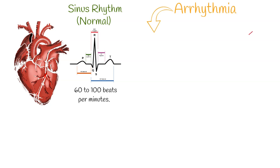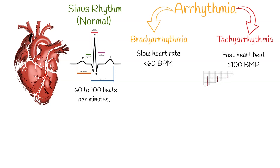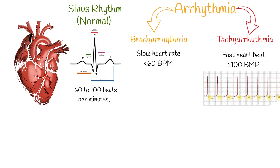The most common way to categorize arrhythmias are bradyarrhythmia and tachyarrhythmia. Bradyarrhythmias are slow heart rates, fewer than 60 beats per minute, and tachyarrhythmias are fast heart rates with a heart rate higher than 100 beats per minute.